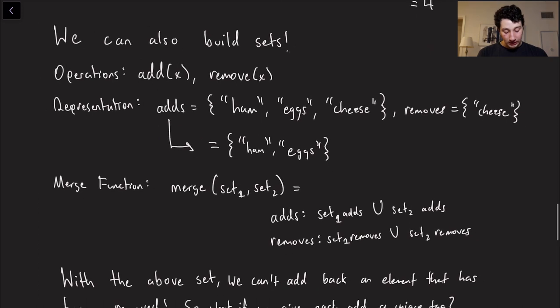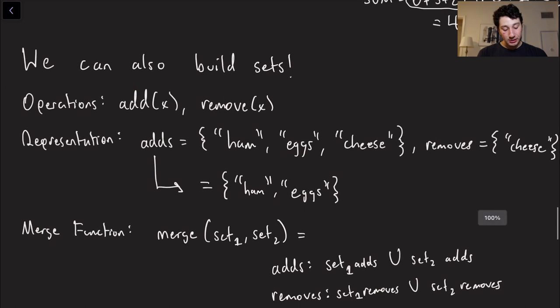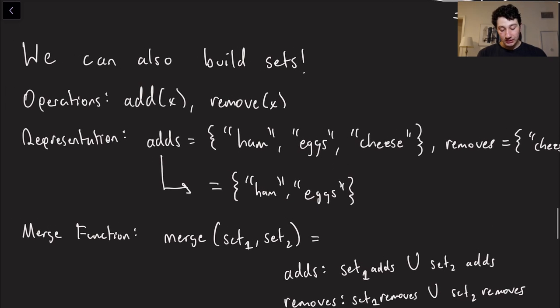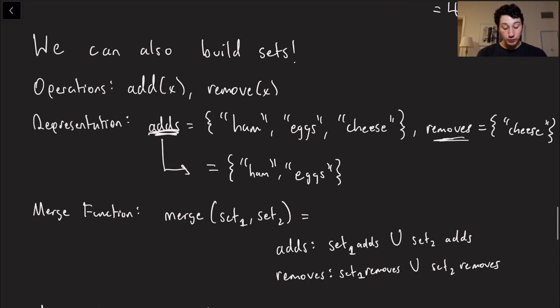So that's simple enough, but we can also do a little bit more complicated things. So let's go ahead and build out some sets. I've kind of been implying we could do this anyway, so let's do it. So the operations on a set would be adding and removing, and the way we could easily represent a set on every single node is we basically have all of the elements that we've inserted, that's called the adds, and all of the elements that we've deleted, which we will in turn call the removes.